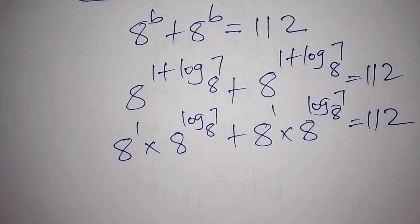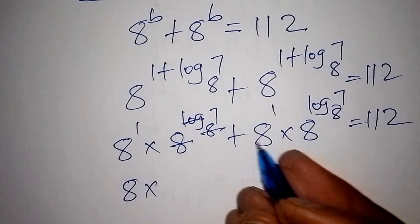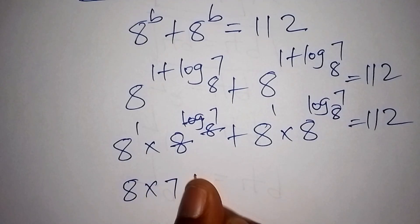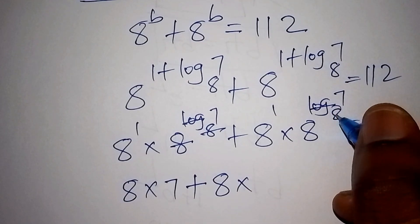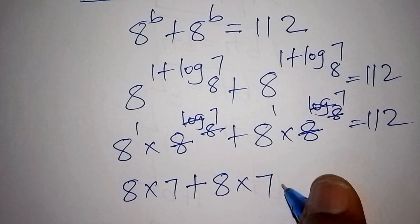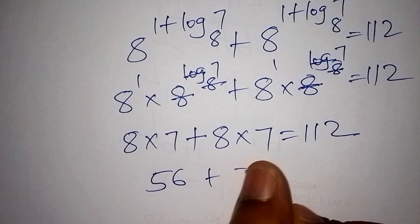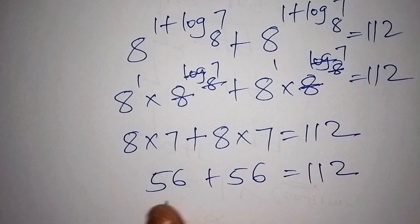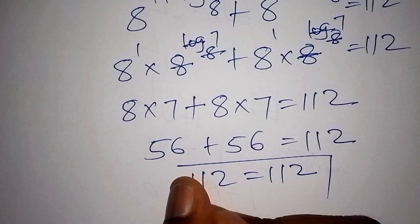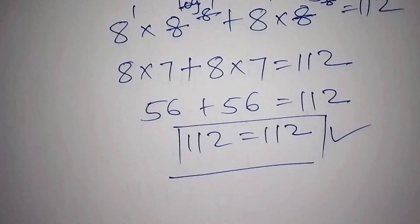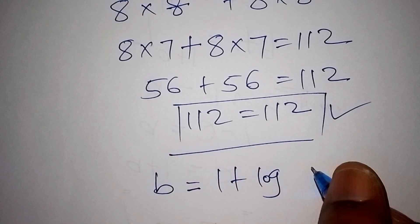Since 8 to the power of 1 is 8, and 8 to the power of log base 8 cancels to give 7, we have 8 multiplied by 7, plus 8 multiplied by 7 equals 112. That is 56 plus 56 equals 112, which confirms 112 equals 112. Our answer is verified and correct: b equals 1 plus log of 7 to the base of 8.